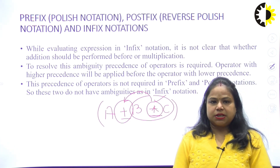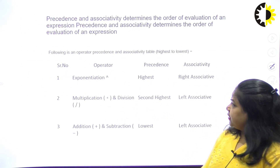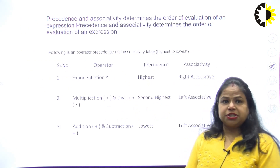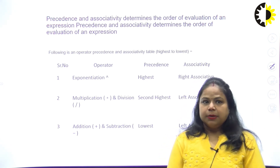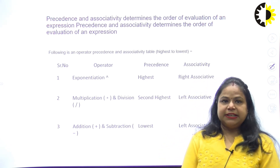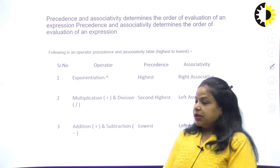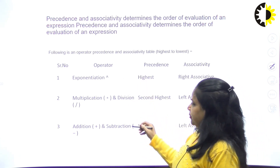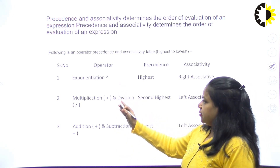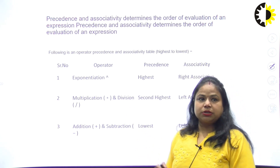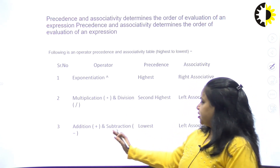This precedence of operators is not required in the concept of prefix or postfix notations, so those two do not have ambiguities. Precedence and associativity determine the order of evaluation of an expression. In the precedence table, we have three types of operators: exponential (highest), multiplication and division (same precedence), and addition and subtraction (lowest precedence).